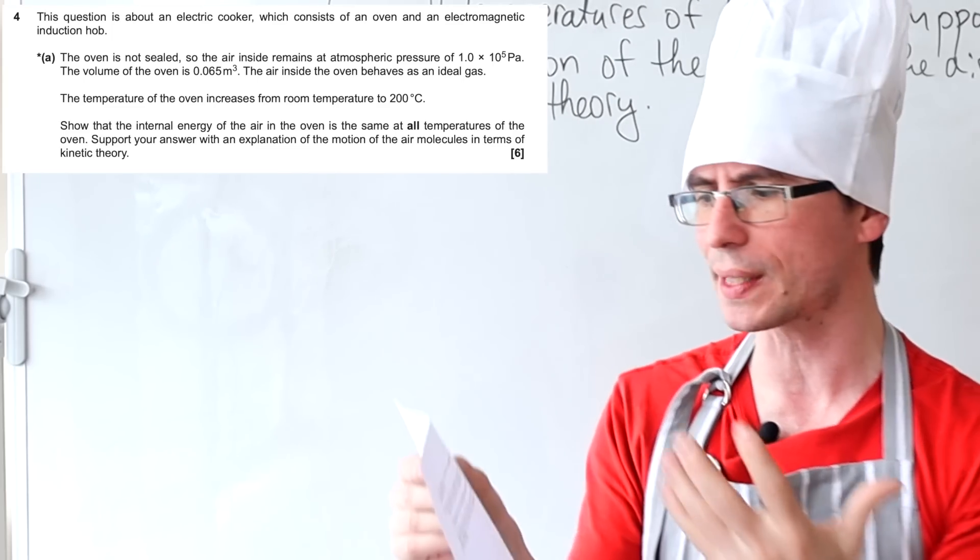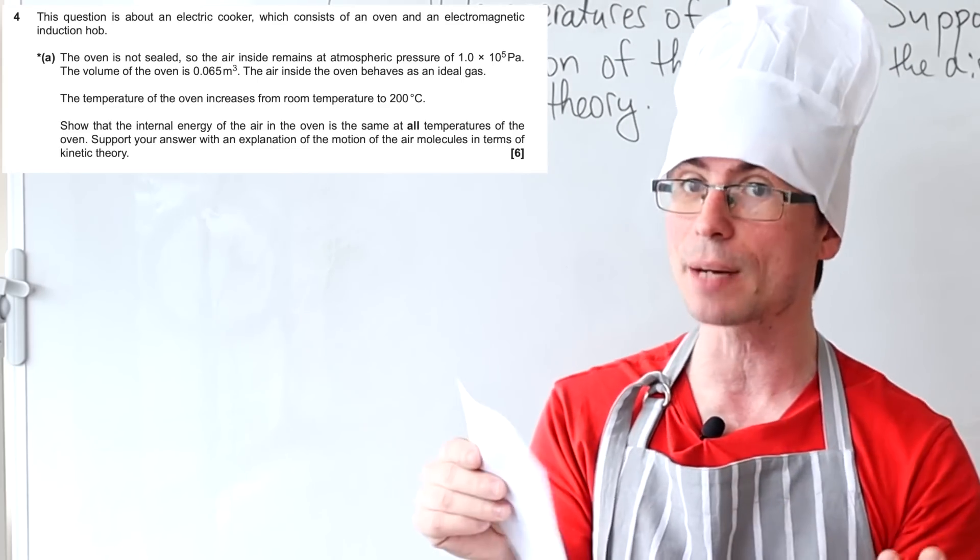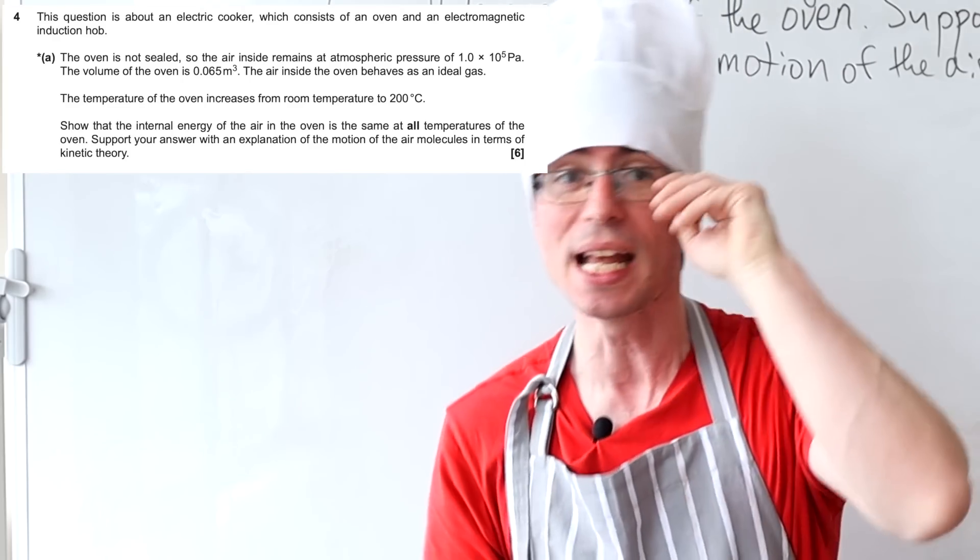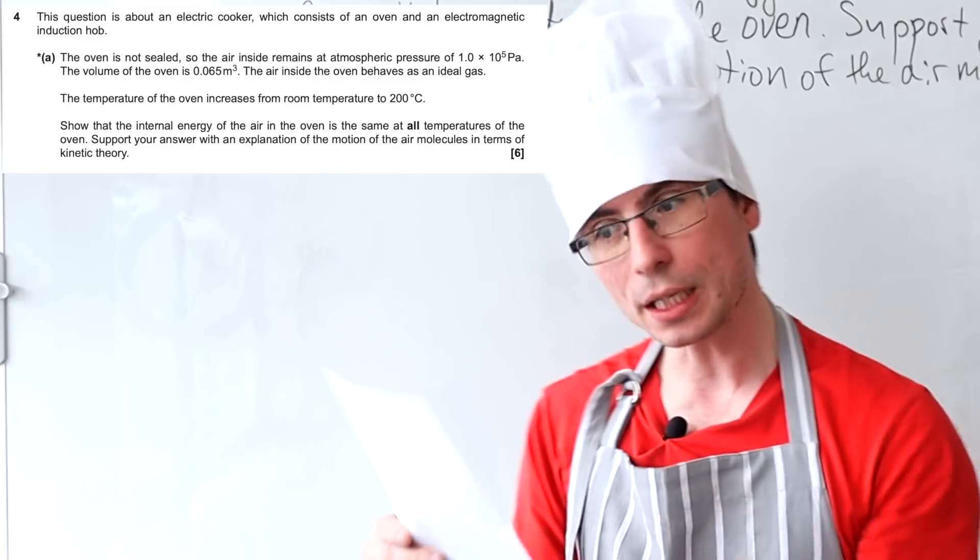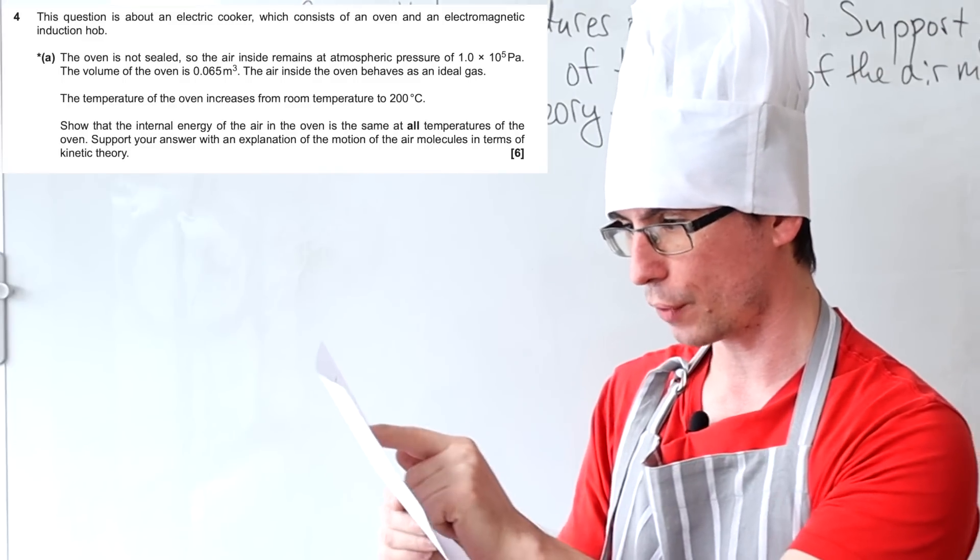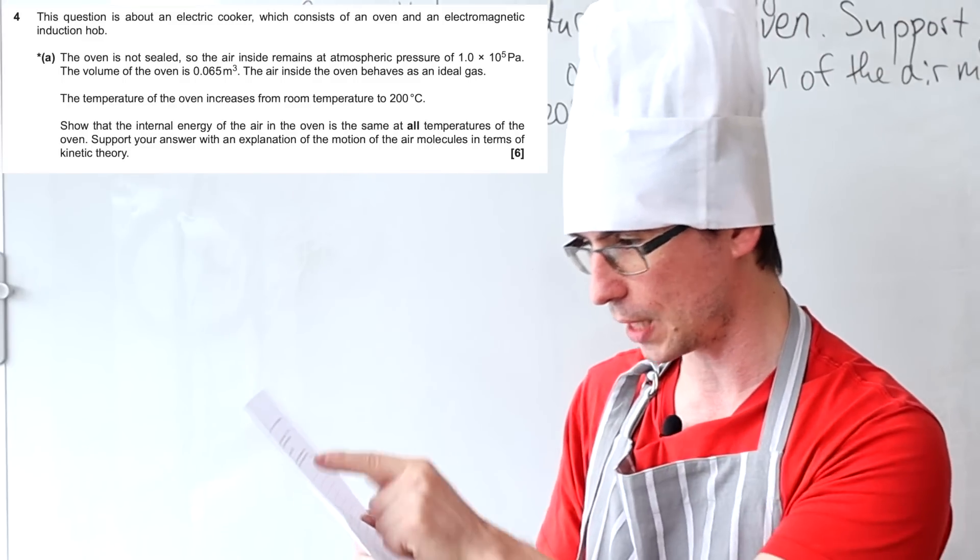Remember, every time we come across a statement which says that the air behaves as an ideal gas, this means that we can ignore the potential energy. So we are increasing the temperature of the oven from room temperature around 20 degrees to 200 degrees C.